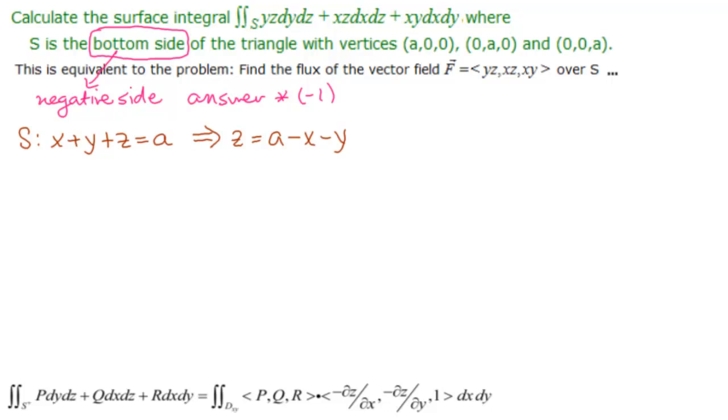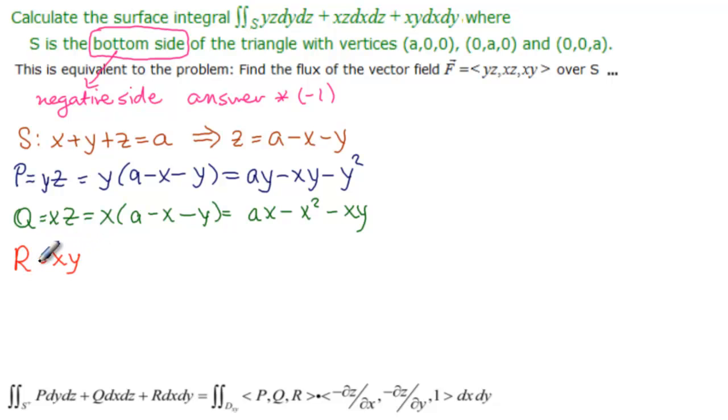Here is our formula. Notice that this part of the formula, the idea is always to get rid of z since we have dx dy here. So let's look at P. P is equal to yz, and that is equal to y times (a minus x minus y), so that's ay minus xy minus y squared. And then we have Q, which is xz, and that's x times (a minus x minus y), so that's ax minus x squared minus xy. And then we have R, which is xy. And it doesn't need anything because it's just x and y.